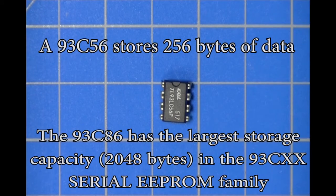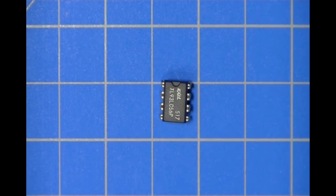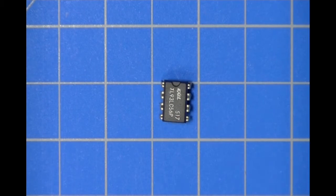Engineers also found they didn't need to store huge amounts of data. This particular part is a 93LC56 — the 93 family was the first family of double EEPROM available to the engineering community. The 93LC56 stores 256 bytes, which is not a huge amount, but if you're storing things like mileage, the vehicle VIN, or key sequences, this component gives you the opportunity to just place it on your circuit assembly and store that information.